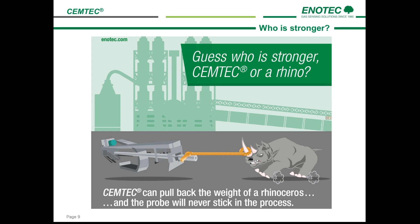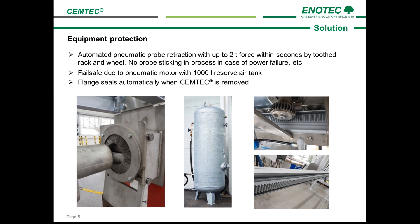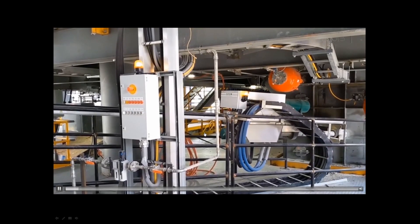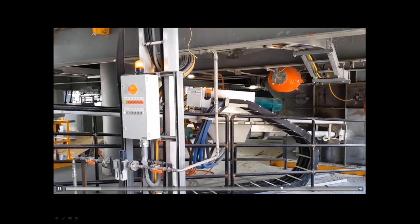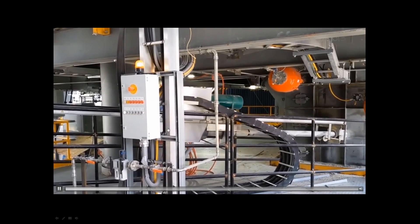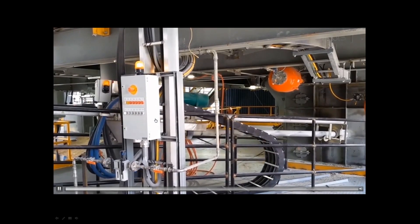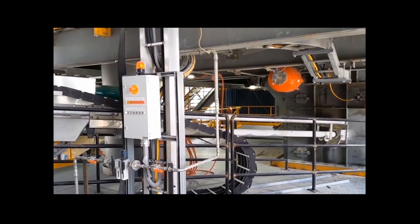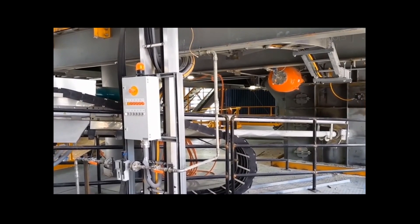Since the CEMTEC has a two-ton pneumatic motor and a rhino weighs around 1.7 tons, our CEMTEC would win — it could pull back the rhino's weight. Last but not least, our flange seals and opens automatically during retraction and insertion of the probe, which is a distinct advantage as electrical components right at the kiln inlet are prone to failure. In this video we will see the CEMTEC retracting. Here you see the e-chain with all electrical and pneumatic connections. Here is the local control box, which now has an intuitive touch screen. As mentioned before, the flange seals automatically. Notice the speed of retraction and insertion of the probe.